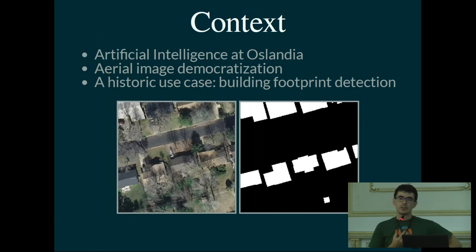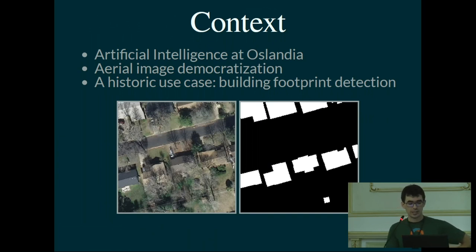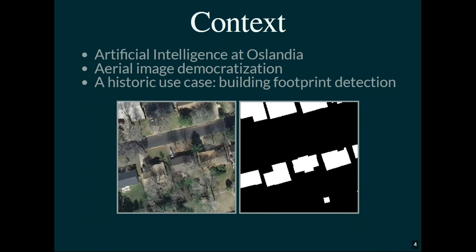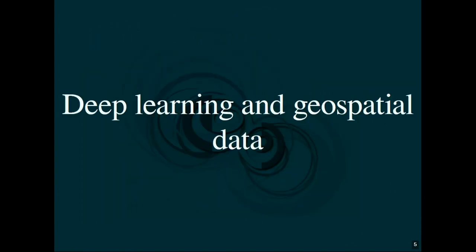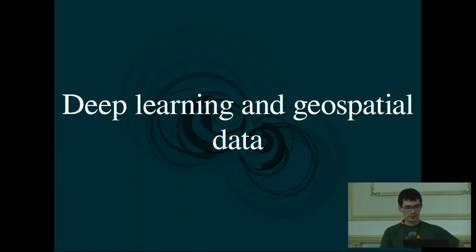Auslandia is not an artificial intelligence-focused company — we are more a geospatial data-related company. But as you might know, we have a lot of democratisation of aerial and satellite images, and this is a very interesting use case to try and get some fast results. We mainly focus on the building footprint detection use case: you have an aerial image and you want to discover where the houses and buildings are on the map.